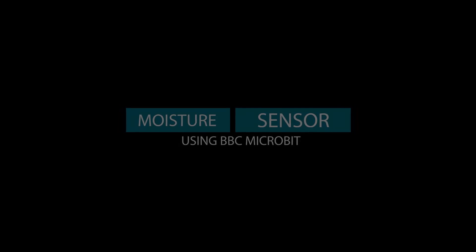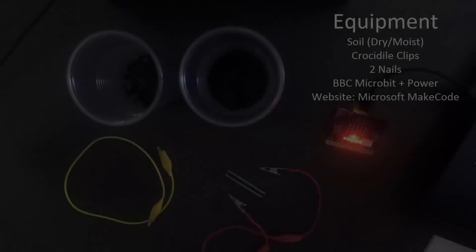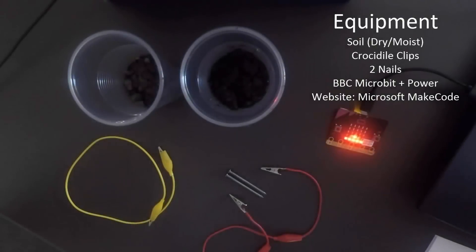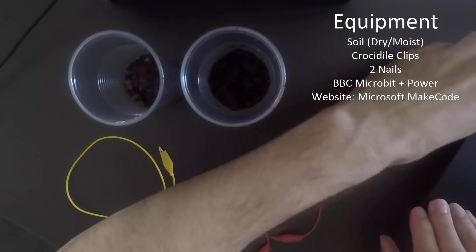Hi and welcome to the next tutorial. Today we're going to look at creating a simple moisture sensor using a BBC micro:bit. You're going to need a few things that are listed on the screen.